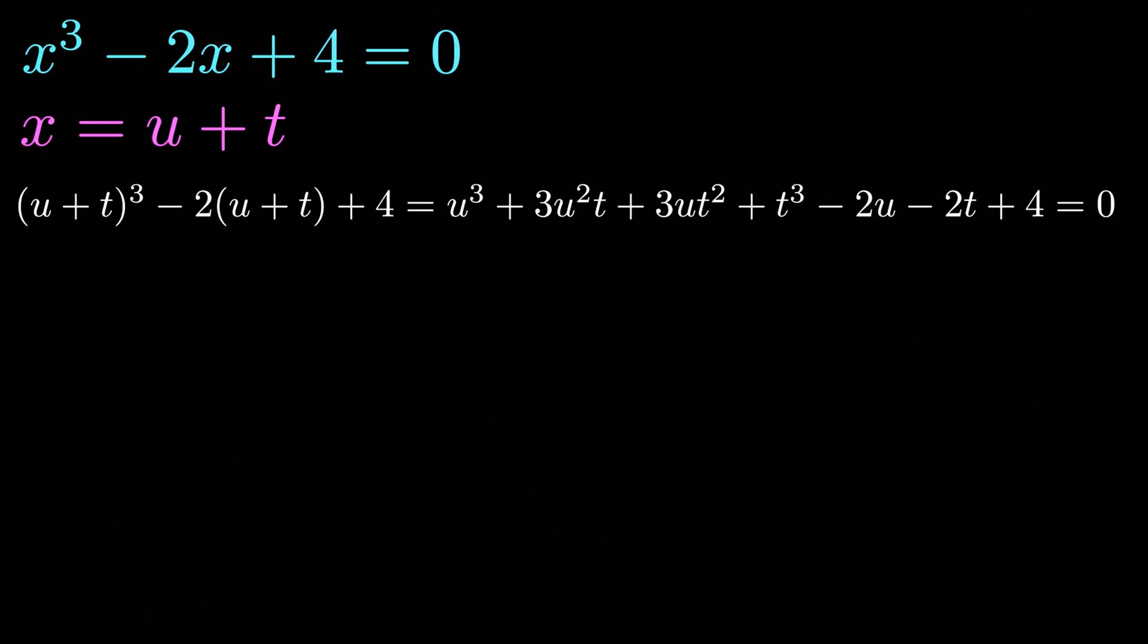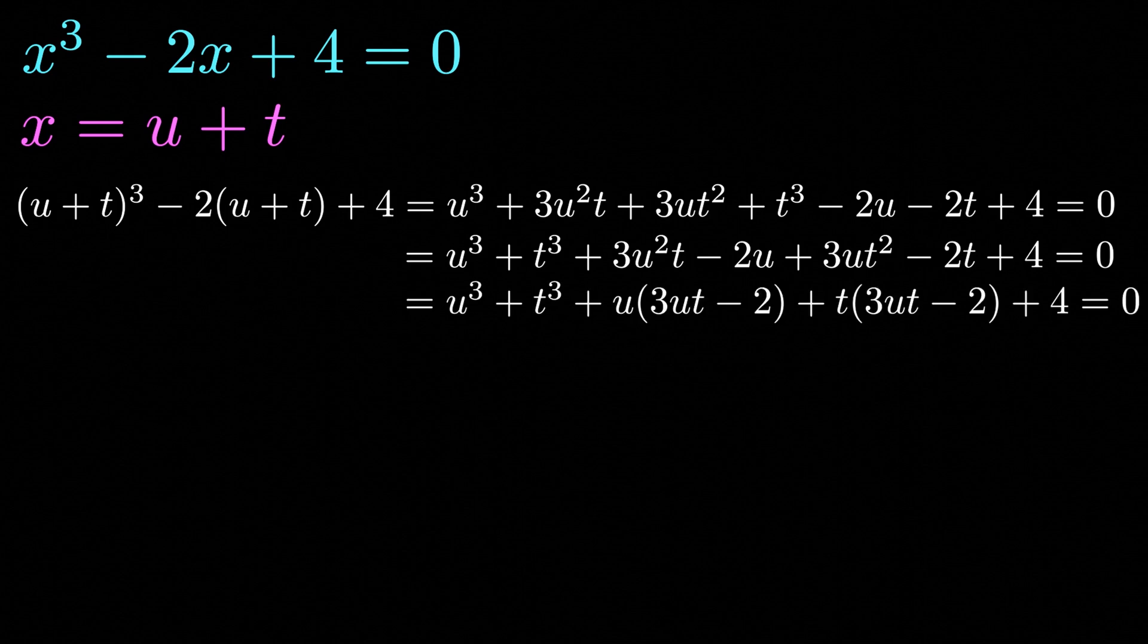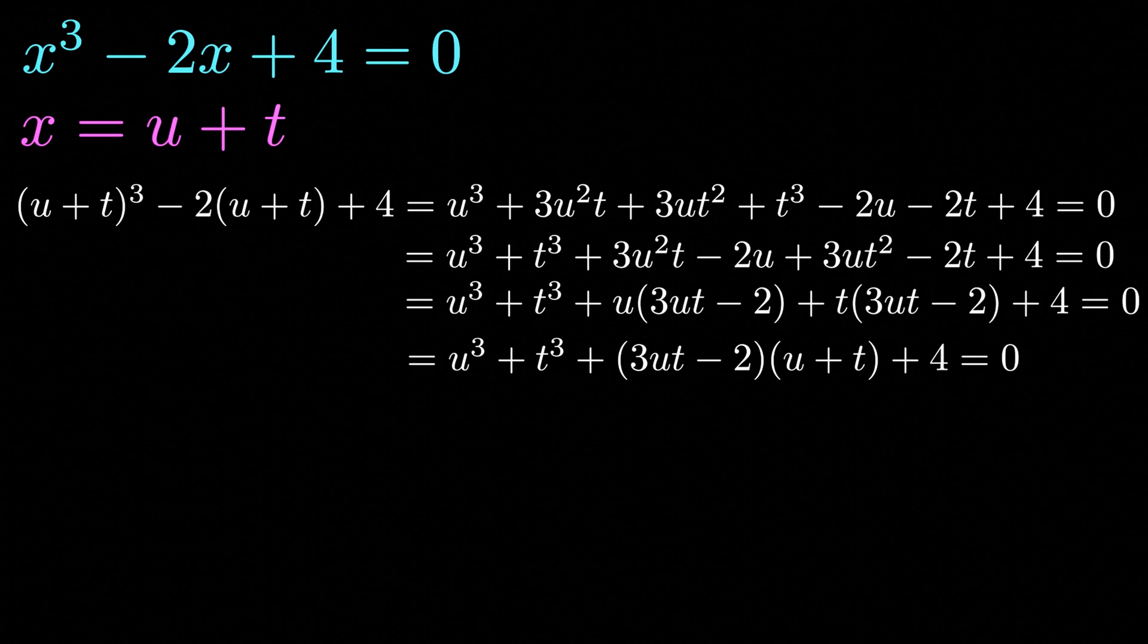What we want to do is continue to simplify our expression as much as possible. Now we're going to rewrite it as u cubed plus t cubed plus 3u squared t minus 2u plus 3ut squared minus 2t plus 4. Now if we factor u out of the third and fourth term, we have u multiplied by 3ut minus 2, and if we factor t out of the fifth and sixth term, we have t multiplied by 3ut minus 2. What we can actually do is factor this 3ut minus 2 out so that we have u cubed plus t cubed plus (3ut minus 2) times (u plus t) plus 4.